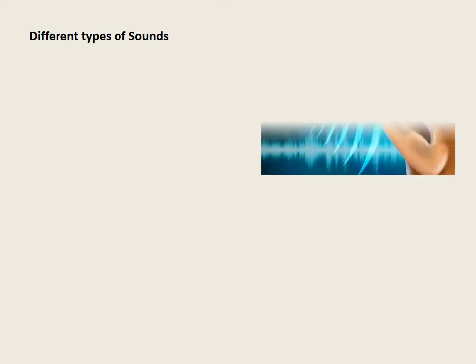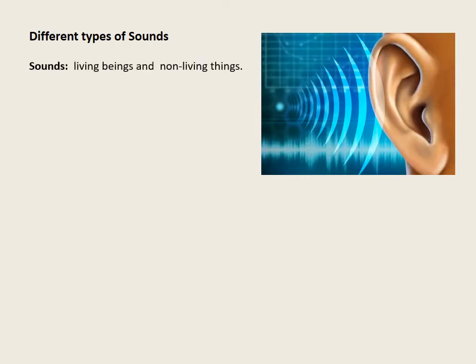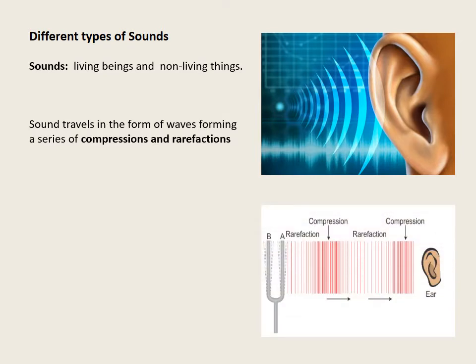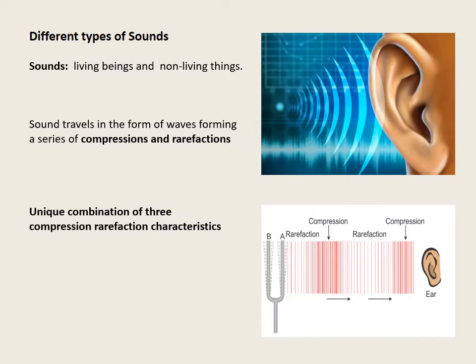We hear different types of sounds around us. Some are produced by living beings and some by non-living things, but all these sounds are different from one another. What makes these sounds different? Sound travels in the form of waves forming a series of compressions and rarefactions. Each sound we hear is a unique combination of three characteristics: loudness or intensity, pitch, and quality or timbre. Let us go through some terms related to sound before studying characteristics of sound in the next slide.